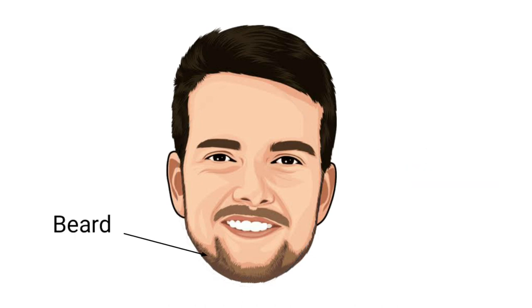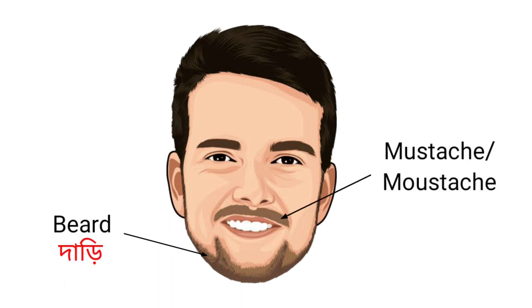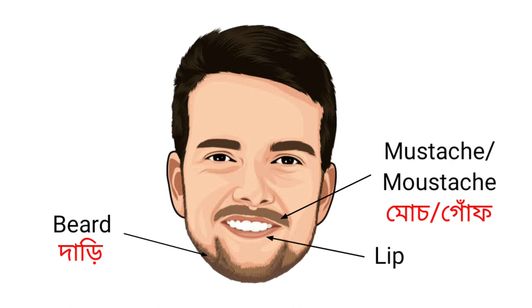Beard — that means Dari. Mustache — that means Moose Ba. Lip — that means Ut. Chin — that means Thutori.